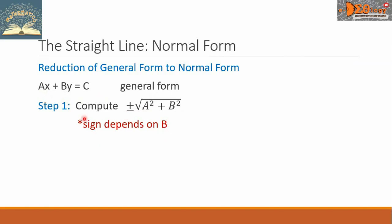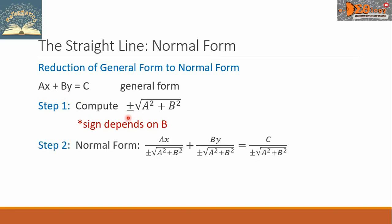We're going to use positive or negative depending on the sign of b. If b is positive, we use positive; if b is negative, we use negative. For step 2, this gives us the normal form, where Ax is divided by the value computed from step 1.